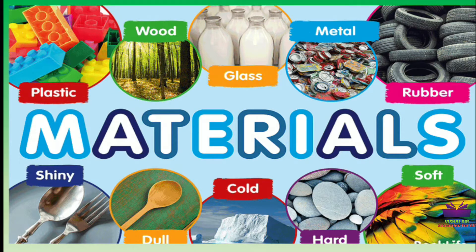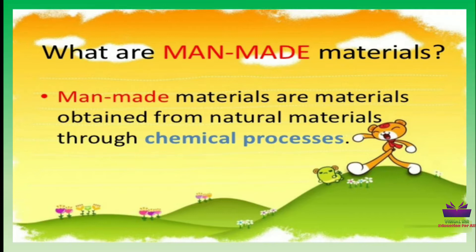Man-made materials are those materials obtained from natural materials through chemical processes. Examples include plastic, glass, chemicals, etc.